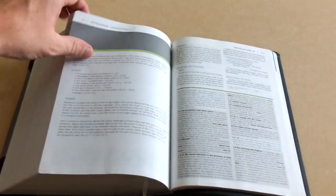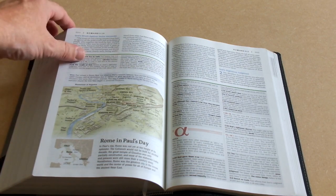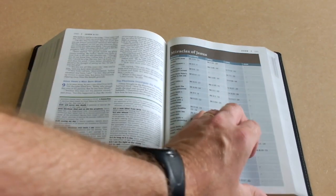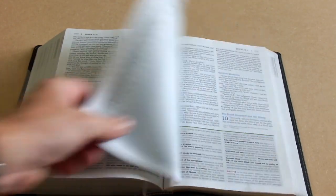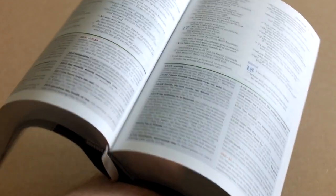But yeah, there's some really good stuff in here. There's a miracles of Jesus table there. This is a really nice Bible. Like I say, you can see as I hold it, it sort of flops open in the hand. The binding is very supple.